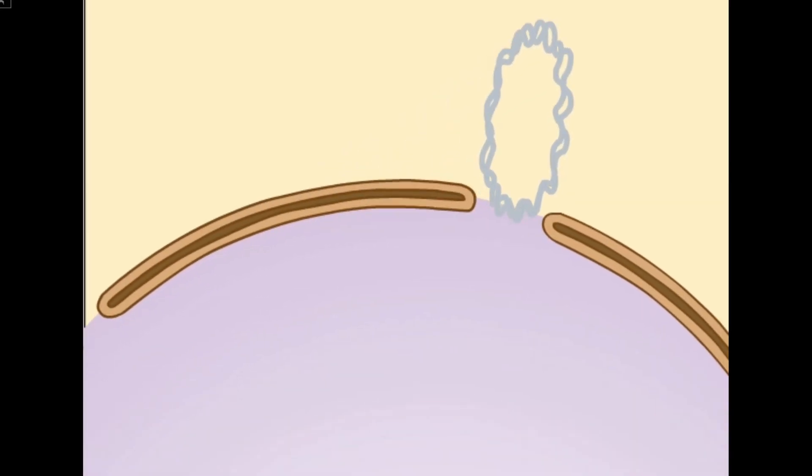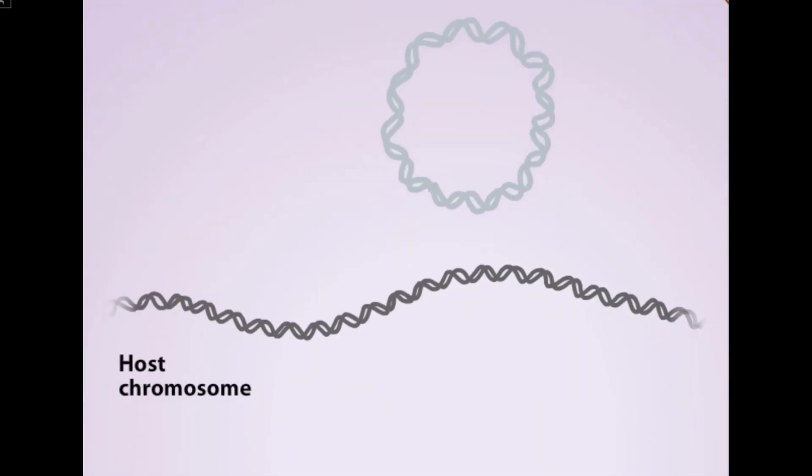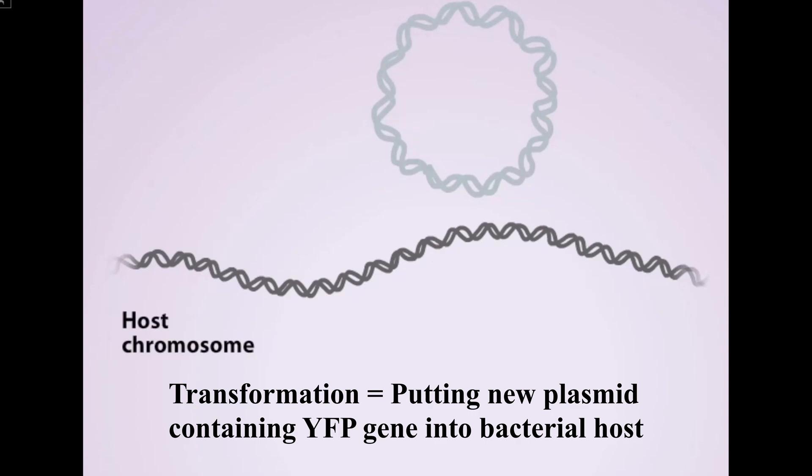To test if everything was successful we next transform the plasmids to the E. coli cells to see if any yellow fluorescent protein would be produced by the bacteria. We used a heat shock transformation.